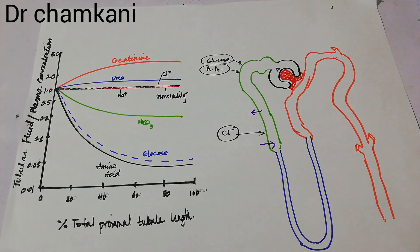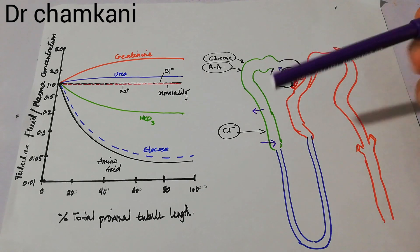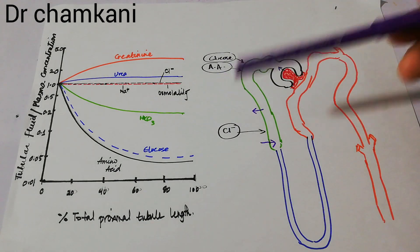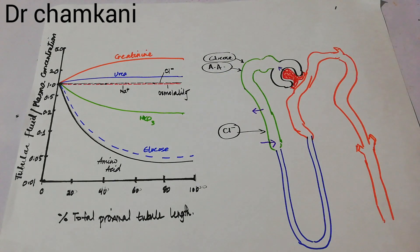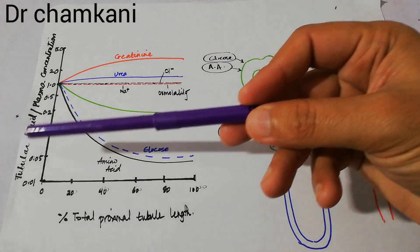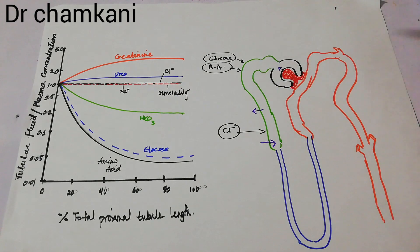This is the urine formation process. We have discussed in detail the filtration process — how filtration increases and decreases, and what conditions affect it. We have also discussed reabsorption of glucose, amino acids, sodium chloride, and how they help each other. If you want to properly understand filtration and reabsorption, you can watch the previous videos. Today we are only talking about the concentration of different solutes along the length of the proximal tubule.